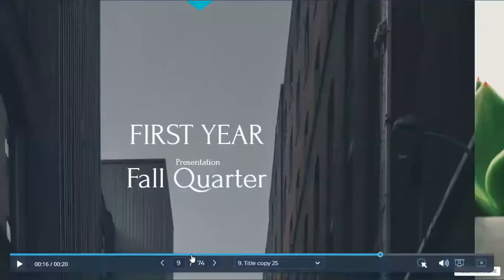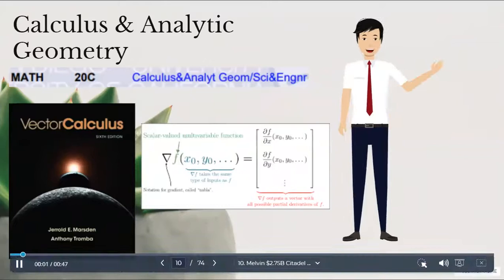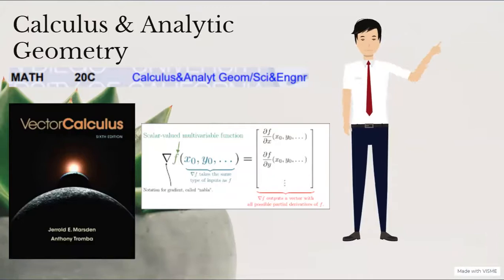Another course I took was Calculus and Analytic Geometry. This course covered vector calculus, double integration, and more. For context, I took AP Calculus BC to be able to take this course. For me, I found this course to be very difficult actually since this was my first math course in college, so I had to quickly adapt from high school math to college math.